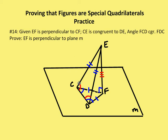I can infer that angle ECD is congruent to angle EDC. And because angles FCD and FDC are congruent, I know that CF is congruent to DF — because if angles are congruent, the sides opposite them are congruent.